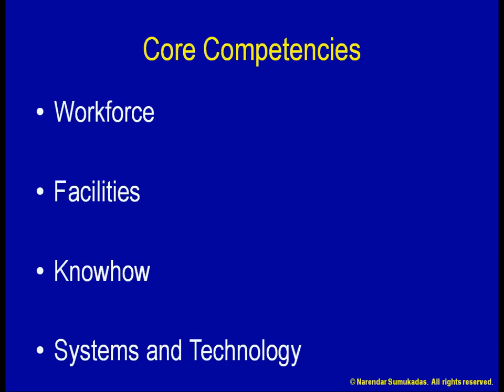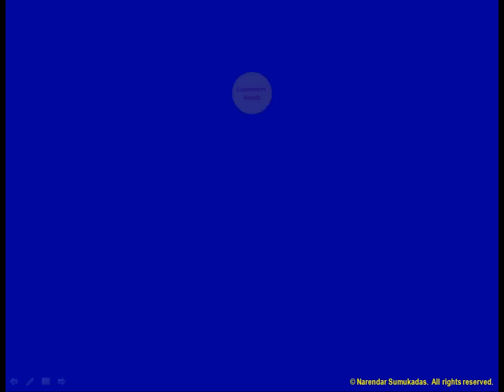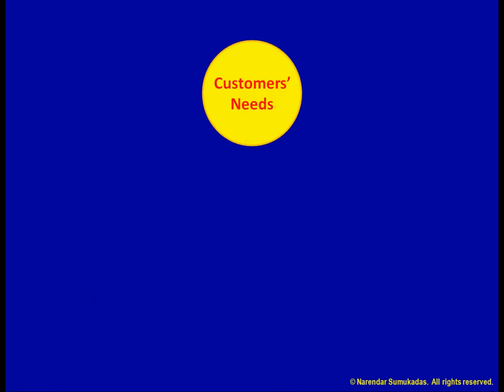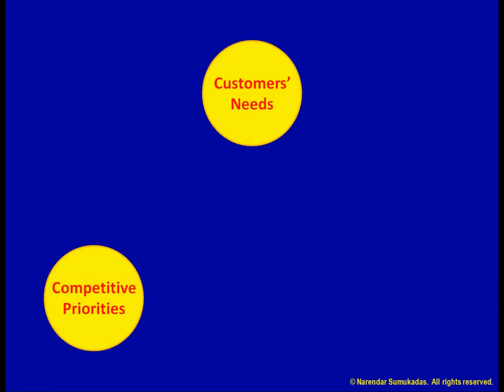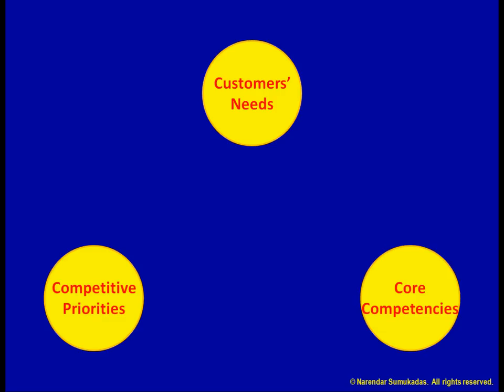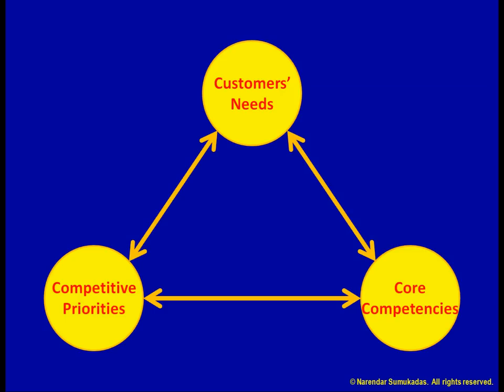We see that three decisions — customers' needs or market segment, competitive priorities or order winners and qualifiers, and core competencies — are interconnected. If these decisions are not aligned together, our operations strategy will be flawed. Our order winners must focus on our customers' needs, and our competencies must support our order winners. Also, the competencies we have developed can lead us into market segments that are a good fit for us, or keep us from other segments.